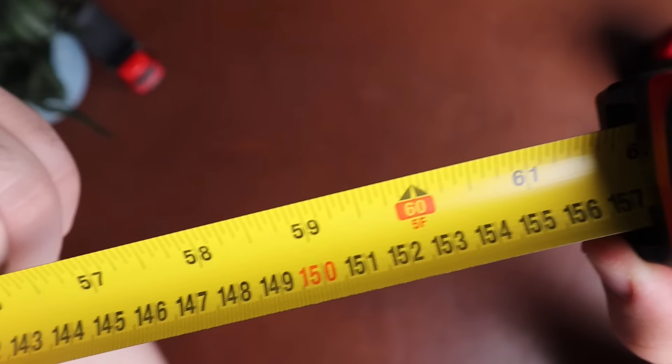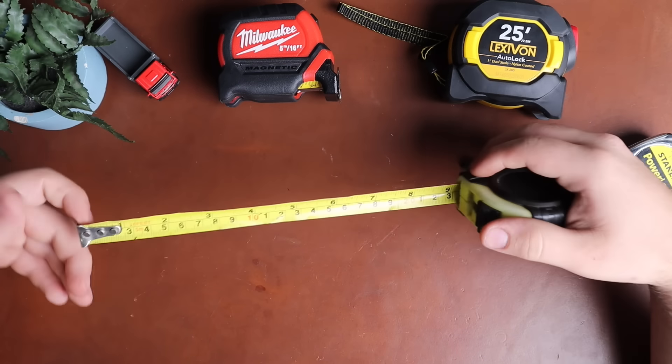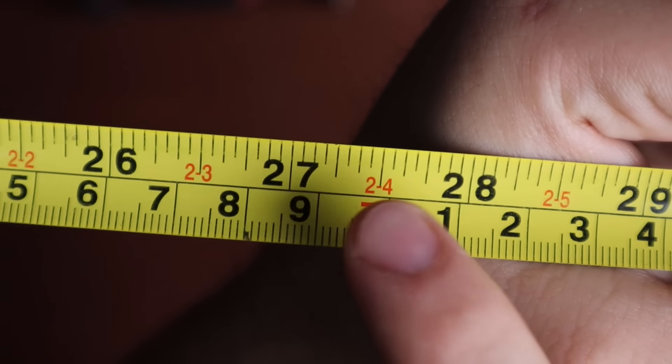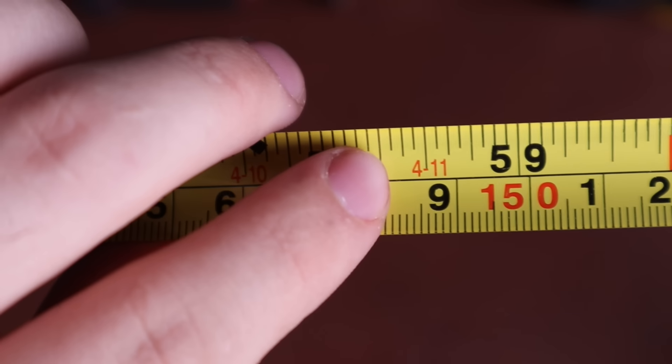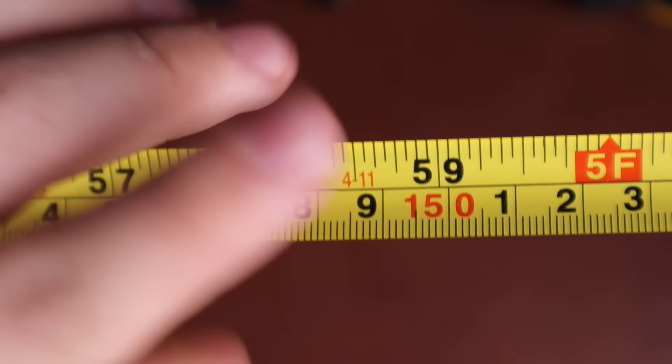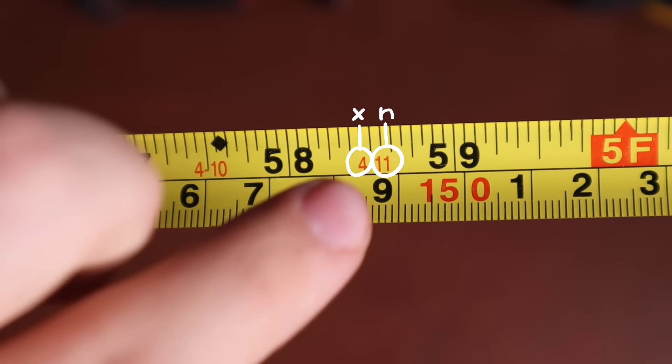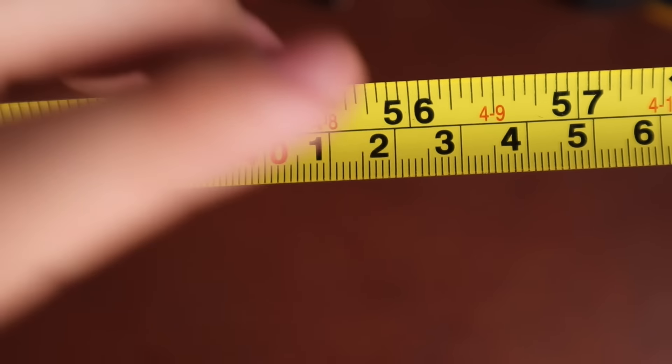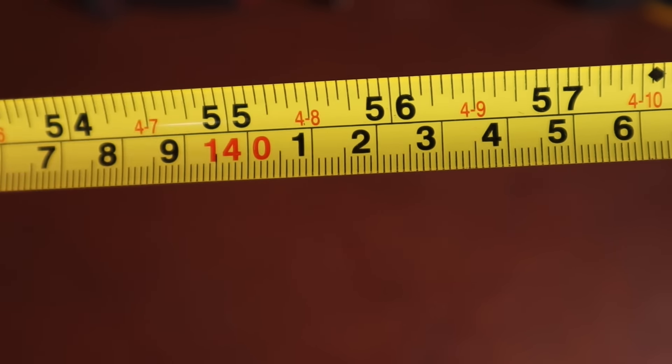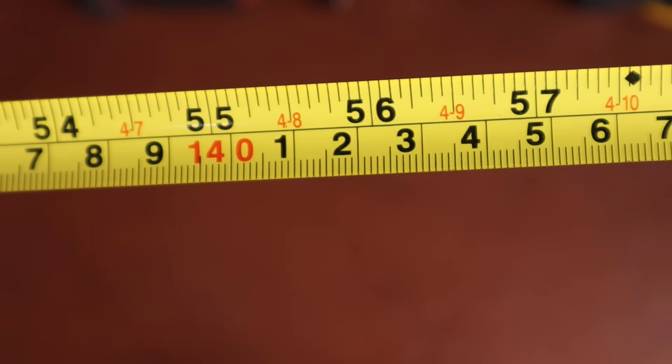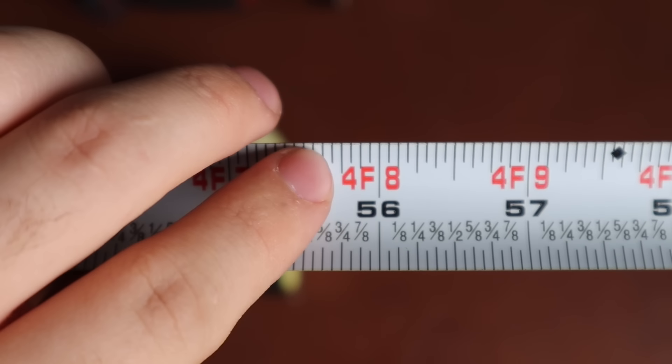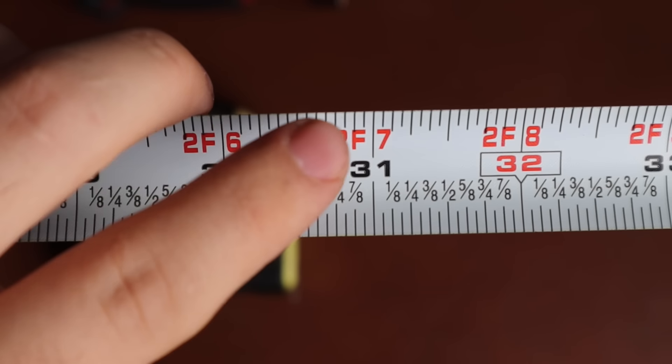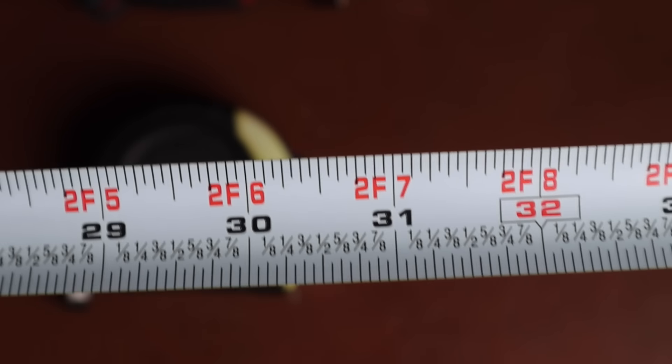We'll also often encounter foot inch marks. For example, on this tape measure, we have four six, four seven, and so on until four eleven. This number indicates that the next inch mark is X foot by N inches. For example, the four eight indicates that 56 inches is four foot eight inches. This other tape, for example, also indicates foot inches right above the inch mark. For example, 31 inches is two foot seven inches.